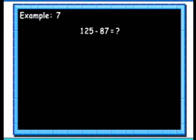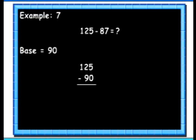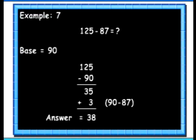Let's see another example. Here we will subtract 87 from 125. Here we will take the base as 90. Instead of subtracting 87 from 125, we will subtract 90. We get 35. Then we will add 90's complement of 87, which is 3, to the result. So we get the answer as 38.